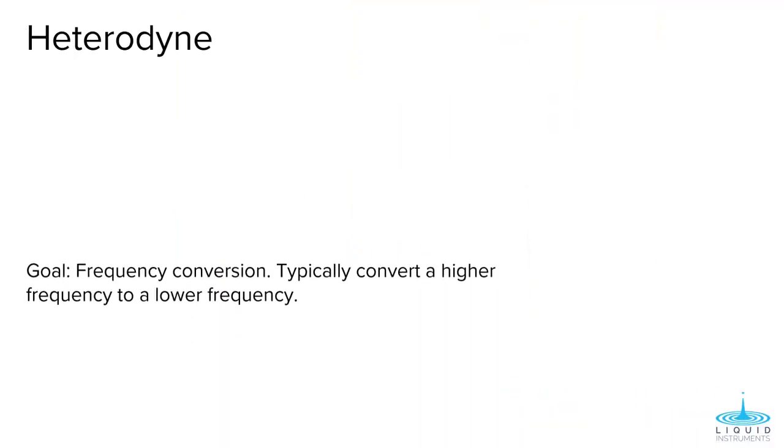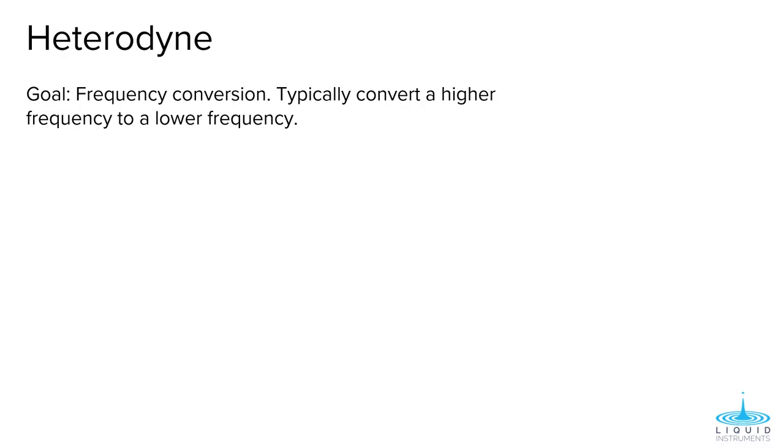Heterodyne conversion shifts one frequency range into another. Typically, this converts a high frequency radio signal to a much lower frequency, as in the operation of a heterodyne radio receiver. Why is this useful?